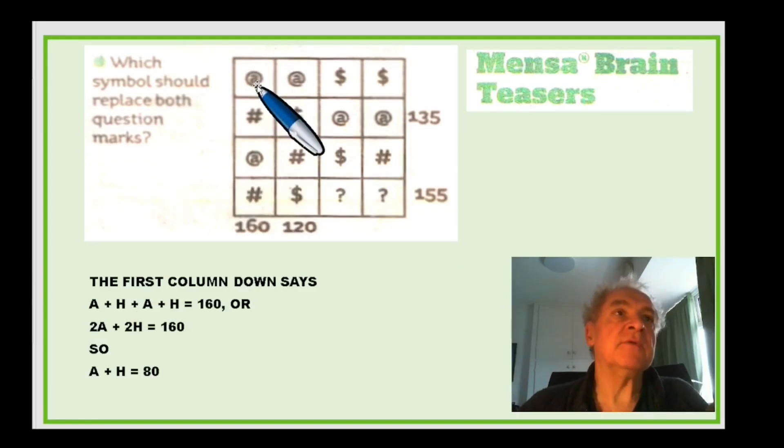Now I'll show you what you're given. You've got this column, so you've got an at, a hash, an at and a hash equals 160. So you add them up. Okay so it doesn't actually tell you to add them up but that's what you've got to do. You've got another column here. You've got an at plus a dollar plus a hash plus another dollar, it's 120. And you've got a hash plus a dollar plus an at plus another at, it's 135. And that's the three bits of information that you're given. So you've got to find the values for the at and the hash and the dollar. Now the first column down says okay so an A plus an H plus an A plus an H equals 160. More compactly 2A plus 2H equals 160. If 2A plus 2H equals 160 then you've got A plus H equals 80. I hope you can follow that.